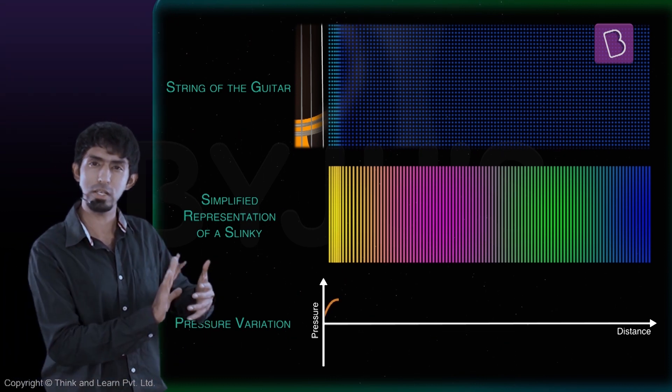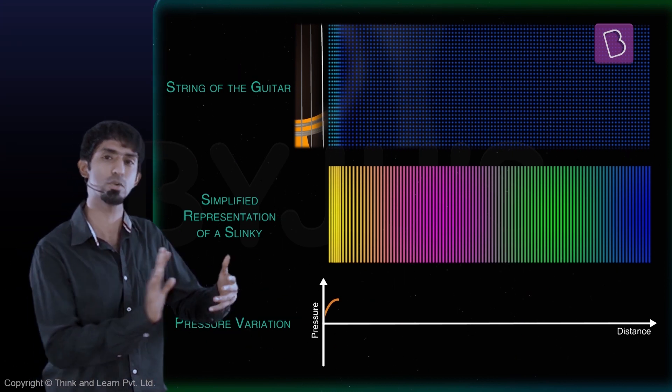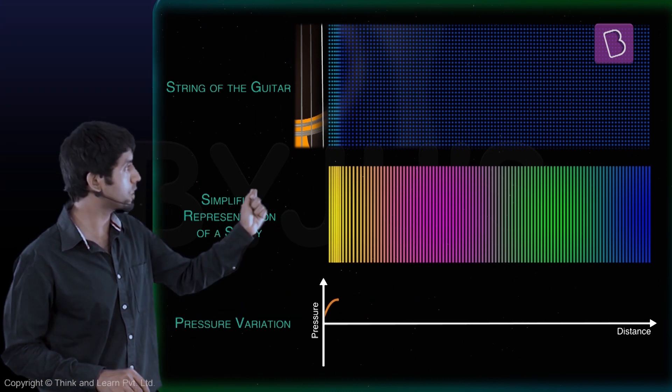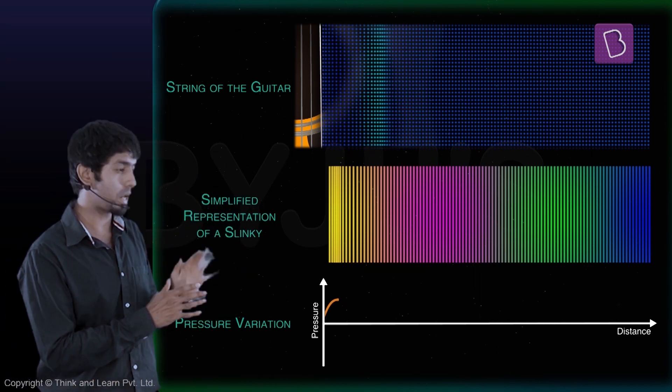So the pressure peaks now and it peaks slowly, so therefore the graph is going to go that way. It's going to reach a peak, and now the string of the guitar is going to get pulled back. In other words, there's a pressure drop.